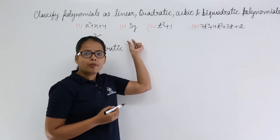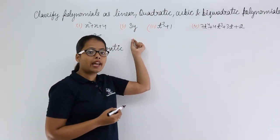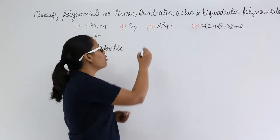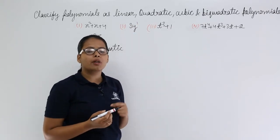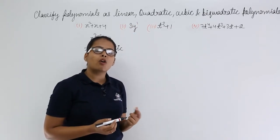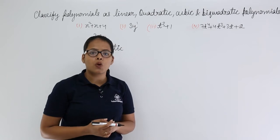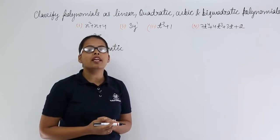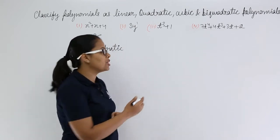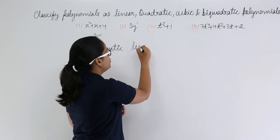Now here the expression is 3y, the variable is y, and the power on y is 1. If the highest power in the expression is 1, then that expression will be a linear expression. So this is a linear polynomial.